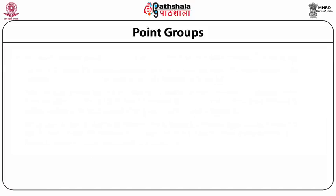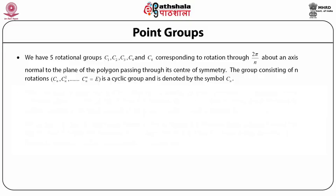There are 32 crystallographic point groups based on the symmetry operations discussed. I will now discuss the point groups. Point groups are the groups forming the symmetry group of molecules. First and foremost, we have five rotational groups designated as C1, C2, C3, C4, and C6, corresponding to rotations by 2π/n for n = 1, 2, 3, 4, and 6. These rotations are about an axis normal to the plane of the polygon passing through the center of symmetry.